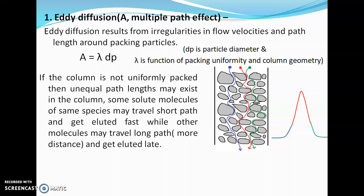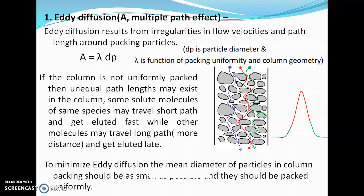If some molecules have taken a very large path, they will elute from the column very slowly, increasing peak width or bandwidth. To minimize eddy diffusion, the mean diameter of particles in the column packing should be as small as possible, and the column should be packed uniformly. This ensures all solute molecules travel with average velocity and the multiple path effect is minimized.